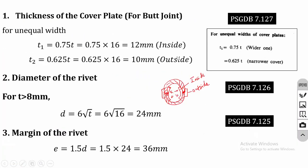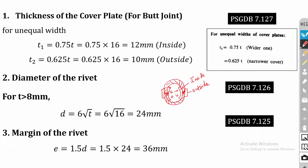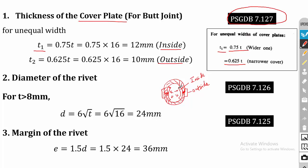This is a butt joint, so it will have cover plates. In the previous lap joint problem we did not calculate cover plate thickness because lap joints have no cover plates. But in the case of a butt joint, cover plates are used to connect the two plates. Referring to data book page 7.127, for unequal cover plates: T1 = 0.75T and T2 = 0.625T. The wider one is on the inside of the boiler and the narrower one is on the outside.